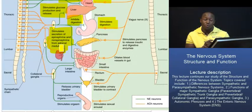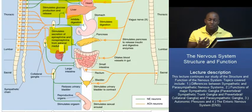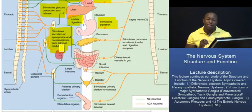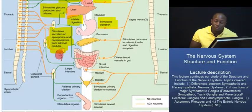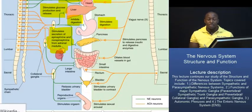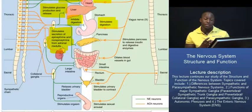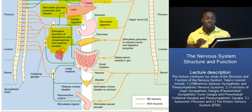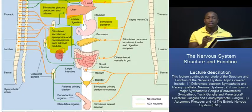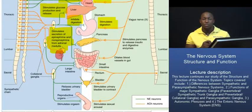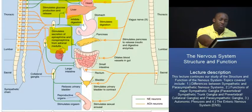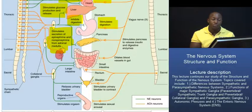One more thing I want to point out on the slide is something we've already talked about, but I want to reinforce: the difference between a pre- and a post-ganglionic neuron. A pre-ganglionic neuron is one that actually has its cell body within the central nervous system. The post-ganglionic neurons are the ones that emerge from those ganglia and carry information or impulses to the effector sites. You cannot fully understand the function of these two systems without understanding the difference between a pre- and a post-ganglionic neuron.